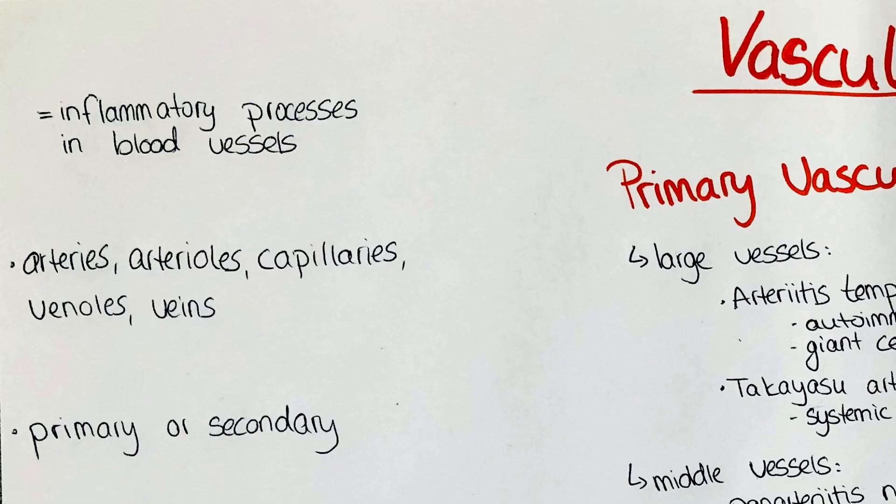These diseases are characterized by inflammatory processes happening in the blood vessels. The affected blood vessels can be arteries, arterioles, capillaries, venules and veins. This inflammation leads to ischemia, so underperfusion of the tissues the blood vessels supply.